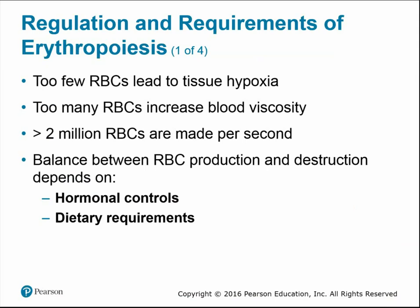The body must maintain a homeostatic balance of red blood cells. Too few can lead to tissue hypoxia, where tissues don't get enough oxygen. Too many can increase blood viscosity, making blood sludge-like and hindering flow. The body makes roughly over 2 million red blood cells per second, so production must be balanced against destruction. This balance depends on hormonal controls and dietary requirements.